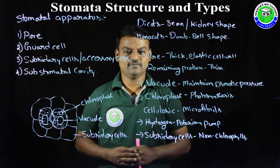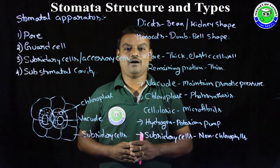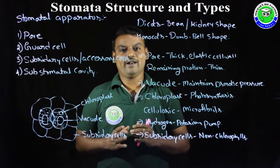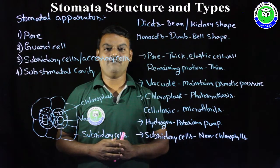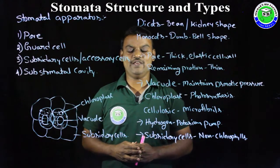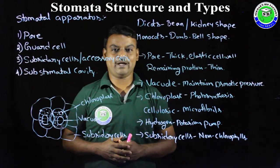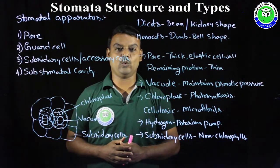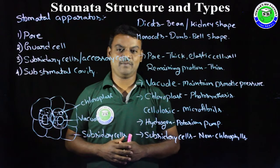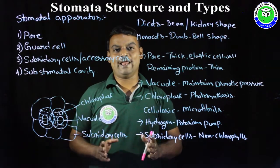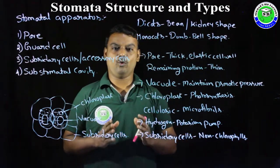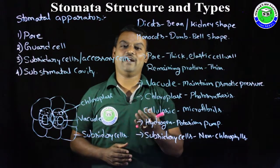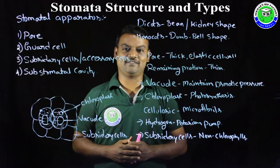The number of stomata varies from one leaf to another. In dicotyledonous dorsiventral leaves, more stomata are present on the lower surface (abaxial surface) compared to the upper (adaxial) surface. In isobilateral leaves of monocots, the number of stomata are equal on both adaxial and abaxial epidermis.